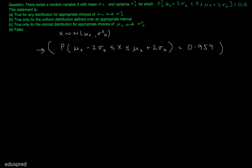Option C is saying that this statement is true only for the normal distribution for appropriate choices of μ and σ². Well, for a normal distribution, the choice of μ and σ² doesn't even matter. If you are working with a normal distribution, this has to hold irrespective of the value of μ and σ². So C is definitely not the right answer.